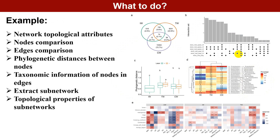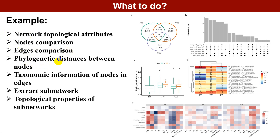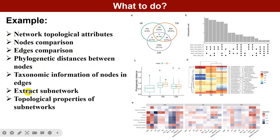So what to compare? We show some detailed contents which have been implemented in the micro-netcom package. Those contents include network topological attributes, node comparison, and edge comparison, phylogenetic distance distributions between nodes, the taxonomic information of nodes and edges. We also extract sub-networks and perform further analysis, including the topological properties of sub-networks.